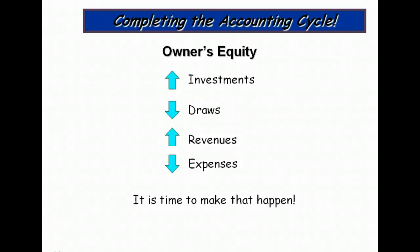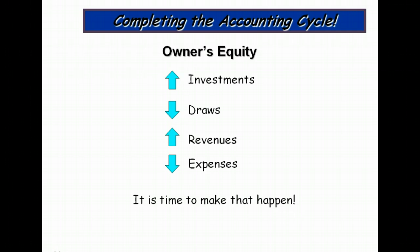I have said that so many times it's probably sounding repetitive to you. But all of that's been in preparation for chapter four and to help you understand why certain accounts have certain balances. And now it's time to actually make owner's equity go up for investments and down for draws and up for revenues and down for expenses. So let's make that happen.